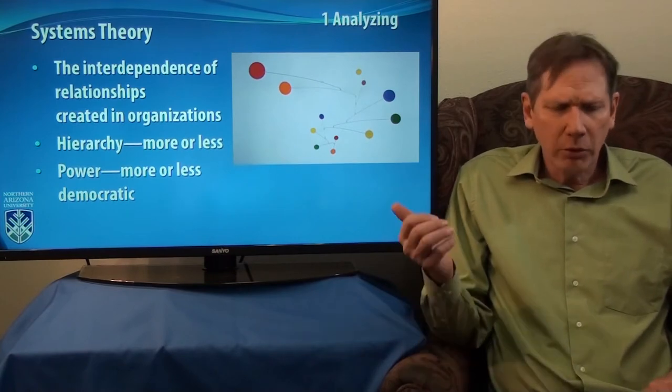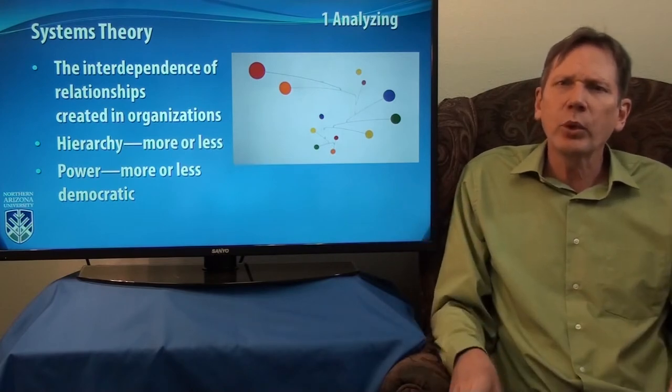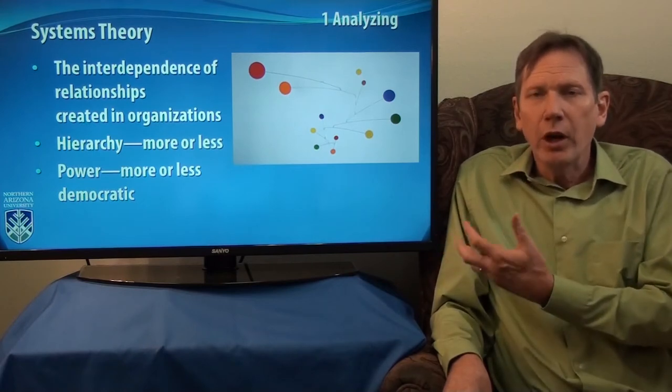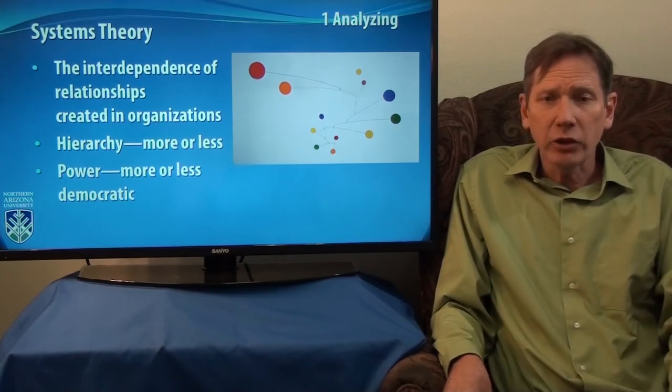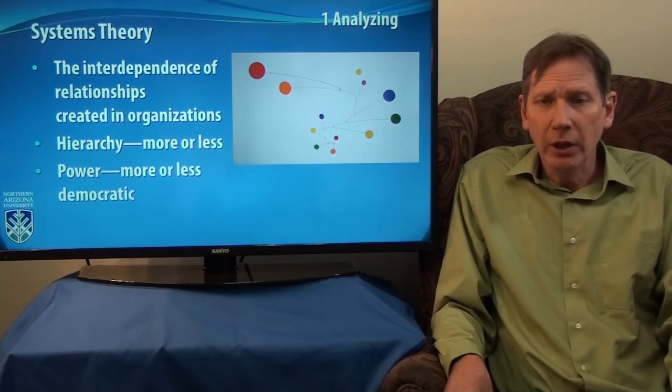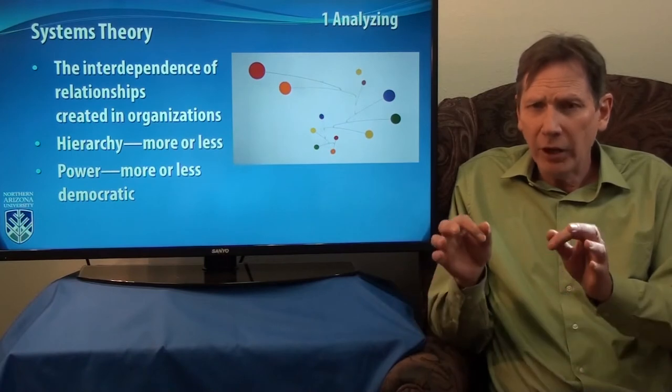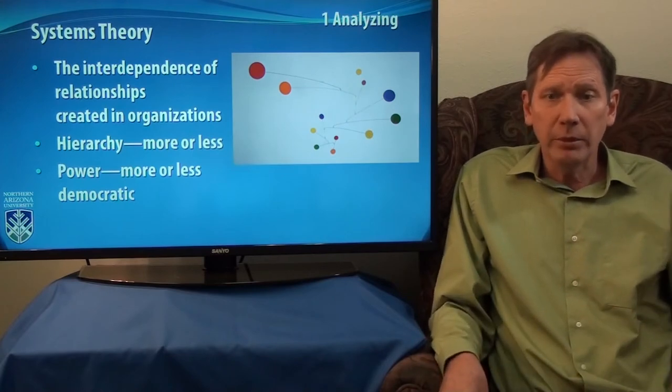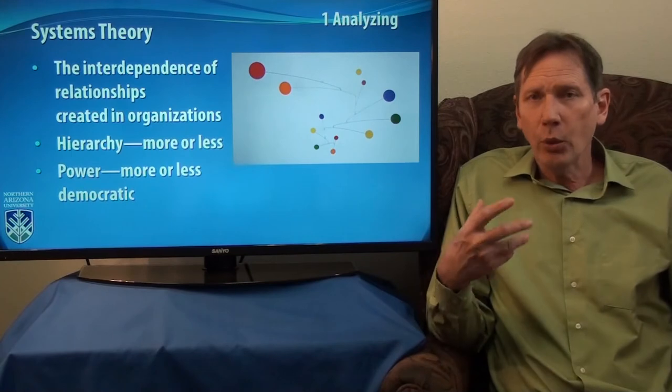A key concept of systems theory: this system is talking about the interdependence of relationships created within organizations or within families. We are interdependent. That's a key term right out of our definition of conflict in two interdependent parties. Often there's a third and a fourth and a fifth party, and we're all in a system. When mom and dad have conflict, the kids feel it and their lives are affected by it. So there's interdependence between everybody.